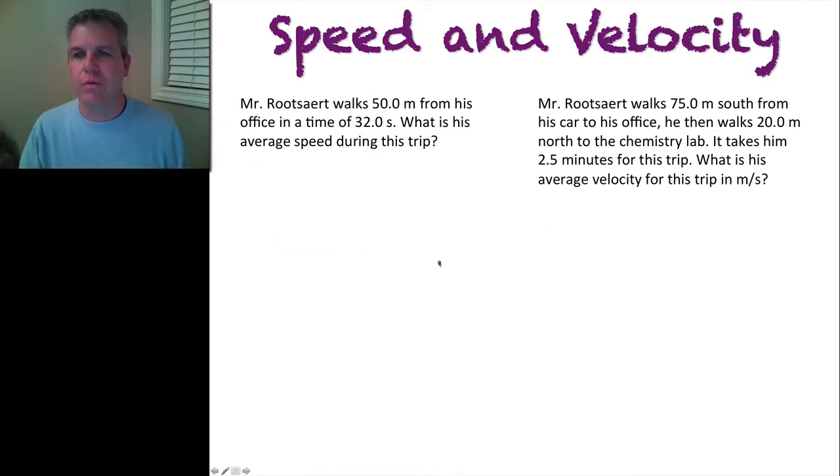So Mr. Rutsart walks 75 meters south from his car to his office, then walks 20 meters north to the chemistry lab. It takes him 2.5 minutes for this trip. What is the average velocity for this trip in meters per second?